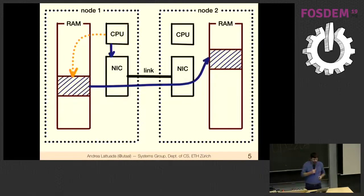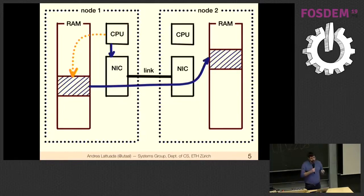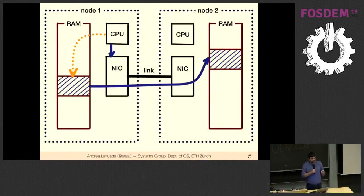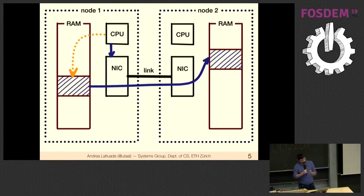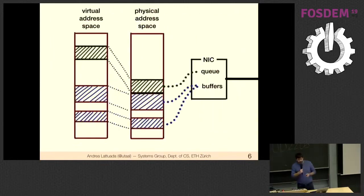With RDMA, the CPU can tell the NIC: here's a buffer — go grab it from my memory, don't ask me about it anymore, and write it directly into the remote process's memory. Node 2, the recipient, has no control over this; its CPU is not involved at all. This is really interesting for high-performance work because networking happens without spending any CPU cycles.